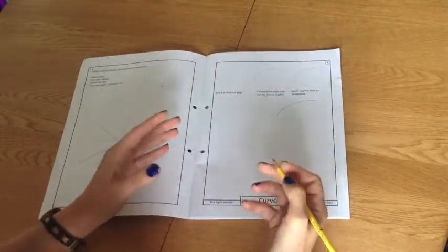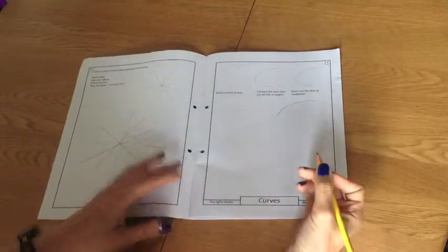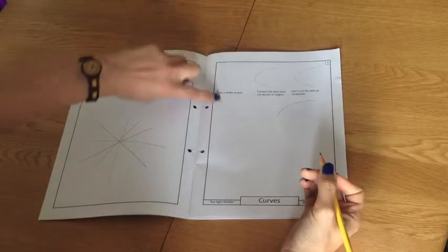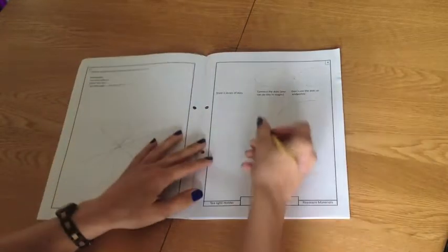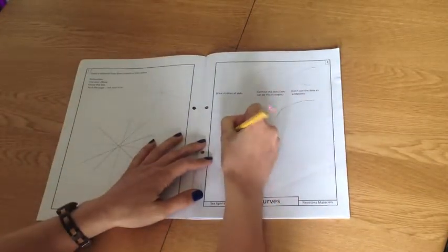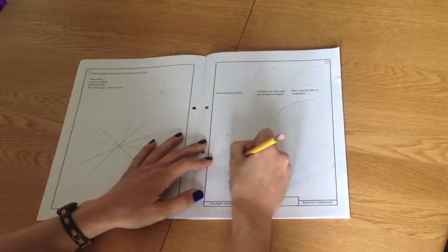And so we're going to try a technique whereby we connect dots together to try and guide where our curve is going to go. So the first thing you need to do is draw a series of dots. I would recommend about four on your page. So one, two, three, four dots like that.